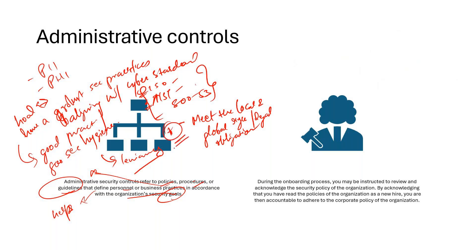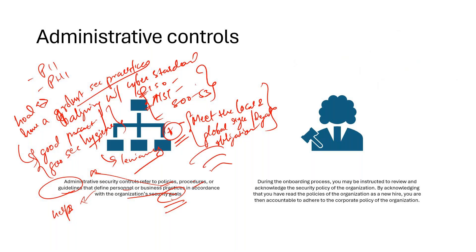If you're operating in a highly regulated industry like BFSI, military, or government entities, you really have to meet those obligations and you don't have the option to define your goal as just good security hygiene — you'll have to go for robust practices. So it's really important to understand what exactly your security goals are as a firm, and based on that you can define your administrative controls, including policies, procedures, and guidelines.